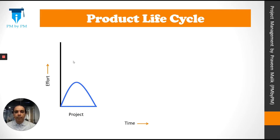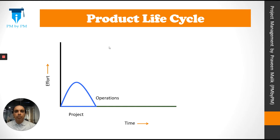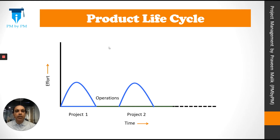Let's look at this diagram. You have an x and y axis — on the x axis there is time, and on the y axis there is effort by the project team. Initially a product is conceptualized and a project is started. At the end of the project a product is created and handed over to operations. Operations maintain it for a long period of time, and then another project is initiated to upgrade the first product and produce a version 2. But the operations keep going on and on until the end of the product — that is when the product is retired.